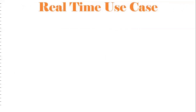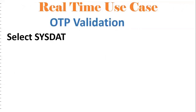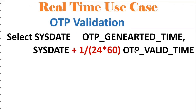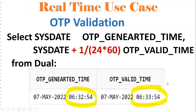Now we'll see some real-time use cases for these date functions. OTP validation: when a transaction is done, an OTP is generated and it is valid for one or two minutes. Using SYSDATE as the OTP generated time, if the OTP is valid for one minute, the valid window is SYSDATE to SYSDATE + 1/(24*60). For example, from 6:32:54 to 6:33:54 — the OTP is valid only if entered within that range. For two minutes: 2/(24*60); for three minutes: 3/(24*60).